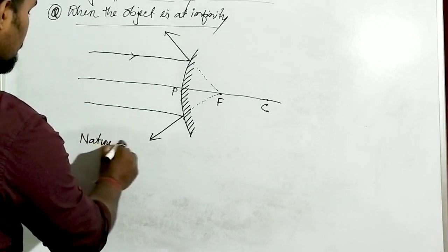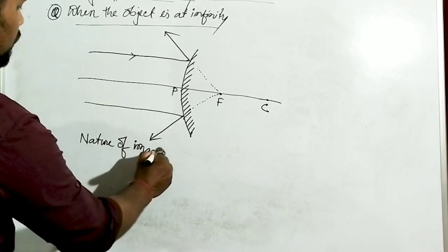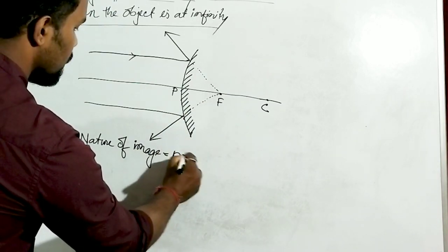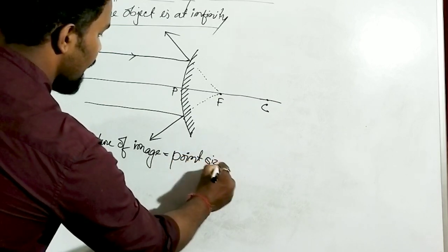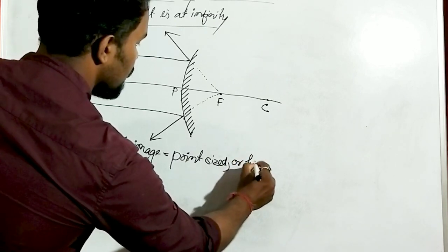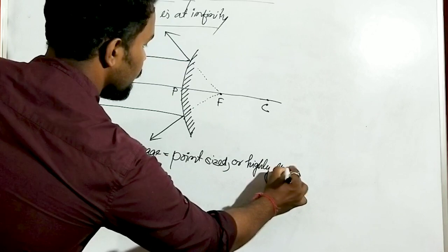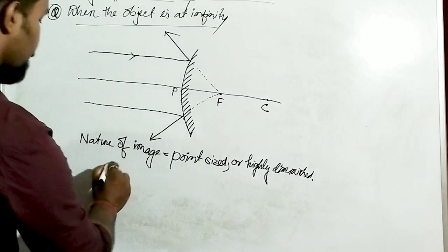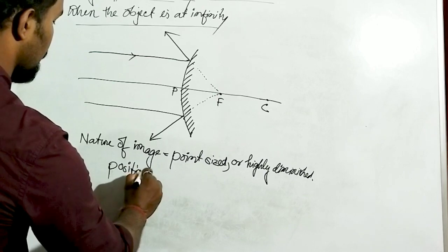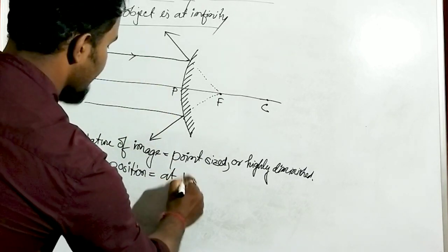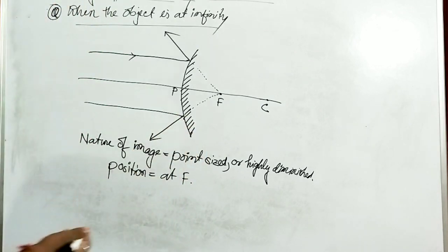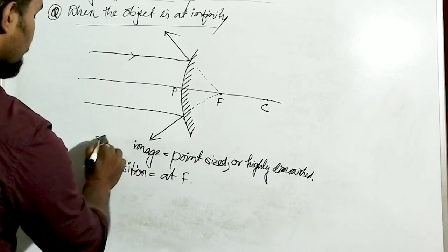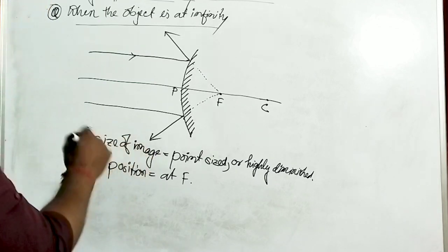Now we write the nature of the image. The nature is: it is highly diminished — you can write point-sized or highly diminished. The position of the image is at focus, at F. Now for the size of the image, it is also highly diminished. For the nature of the image — all convex mirrors always form a virtual and erect image. In case of the concave mirror there is only one condition where it forms virtual and erect, but for the convex mirror both positions give a virtual and erect image.